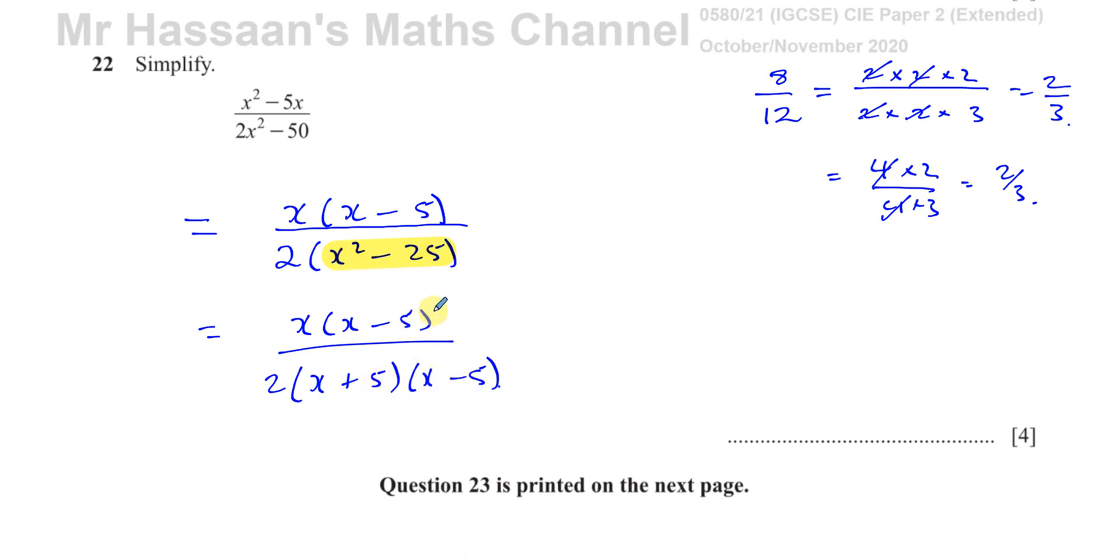Now we see there is a common factor of x minus 5. You can cancel it out and you're left with x over 2 times x plus 5. You can write your answer like this or you can write your answer as x over 2x plus 10.